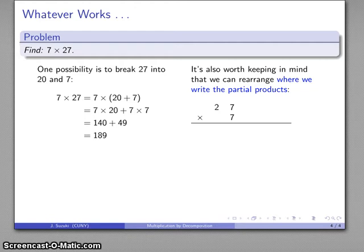Another thing that's worth keeping in mind is we can rearrange where we write the partial products. So going back to this particular example, what I did is I had to find 7 times 20 and 7 times 7, and I wrote the partial products and sums horizontally, but I can also write them vertically: 7 times 20, 7 times 7, add them together as my product. And again, here we have the beginnings of something that should look as a very familiar way of multiplying two numbers.